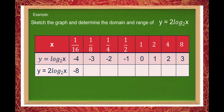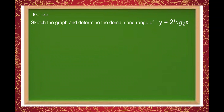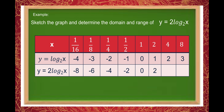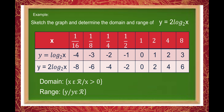For x equal to 1/8, log base 2 gives negative 3, multiplied by 2 gives negative 6. Next, multiplying negative 2 by 2 gives negative 4. Then negative 1 times 2 is negative 2. Then 0 times 2 is 0. If y in log base 2 of x is 1, then for 2 log base 2 of x the value is 2. Next, 2 times 2 is 4, and 3 times 2 is 6. So from the table, the domain is x is an element of real numbers where x is greater than 0, and the range is y is an element of real numbers.